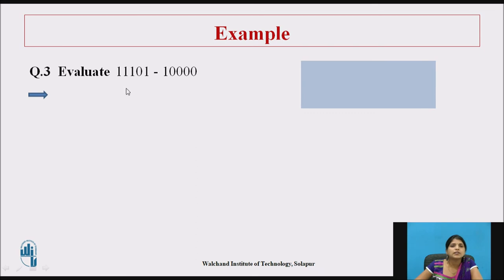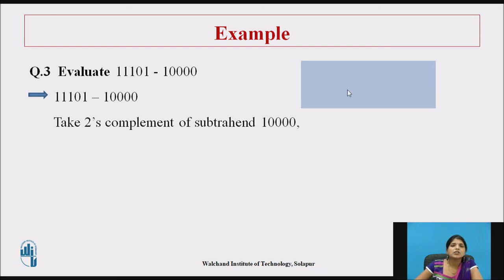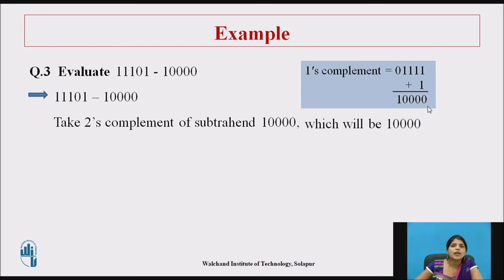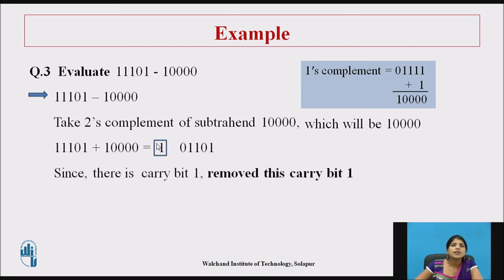Example 3: 11101 minus 10000. Step 1 — 1's complement of the subtrahend 10000 is 01111; add 1 to get 10000. Step 2 — add 10000 to the minuend 11101, giving 01101 with a carry bit. Since there is a carry, discard it. The result is 01101 — a positive value. In this way you can solve subtraction examples using 2's complement.